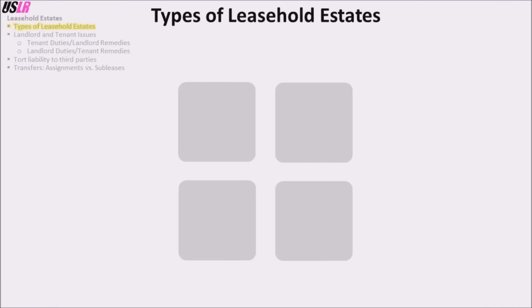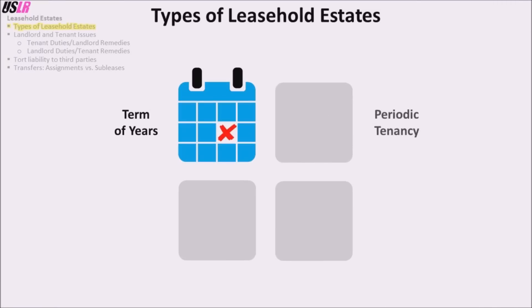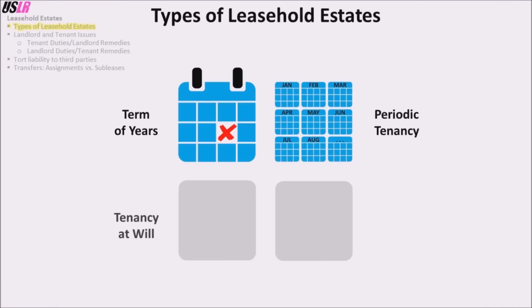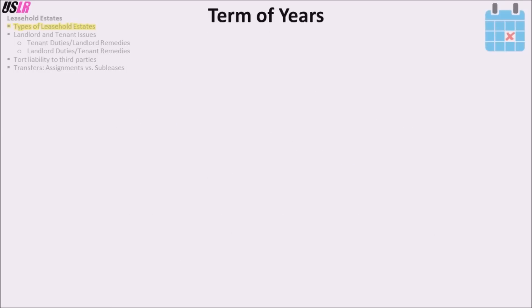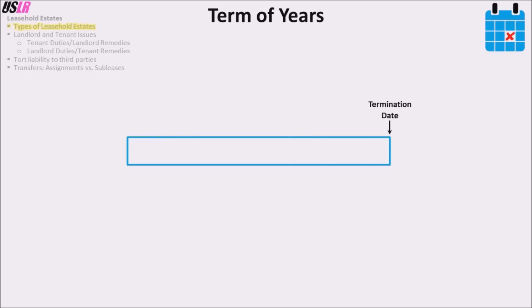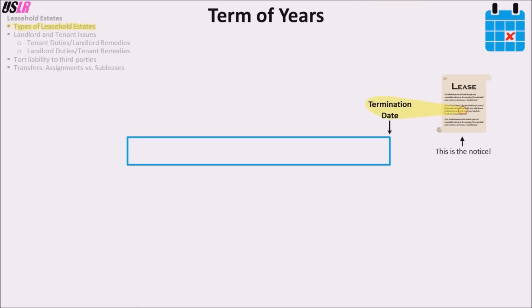There are four kinds of leasehold estates: term of years, periodic tenancy, tenancy at will, and tenancy at sufferance. The term of years is the most common leasehold estate. It lasts for a fixed period of time, so any lease agreement with a termination date is a term of years. There is no need for the tenant to give notice of termination because the termination date is the notice.